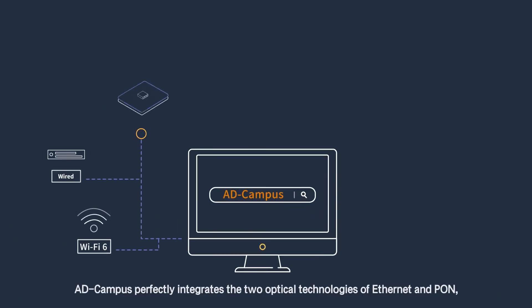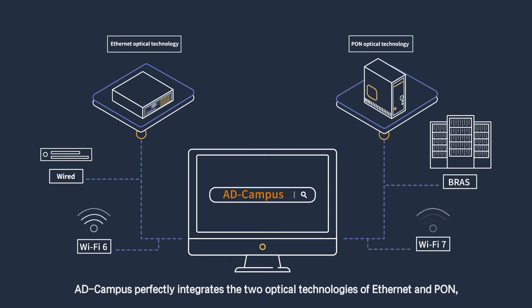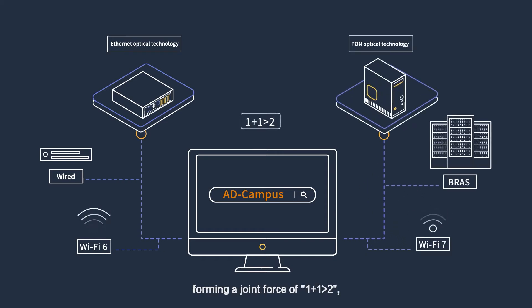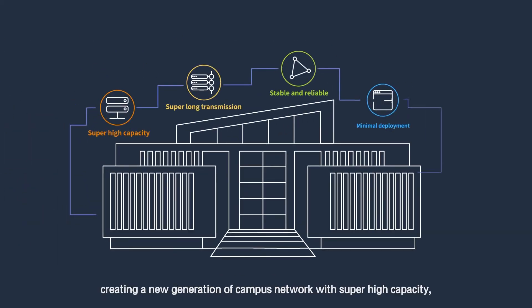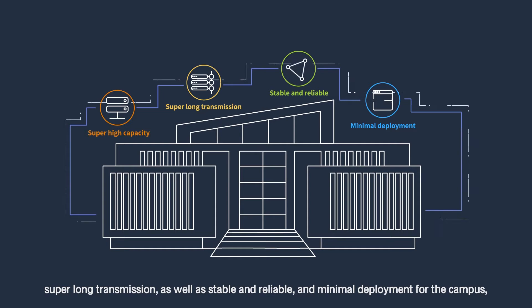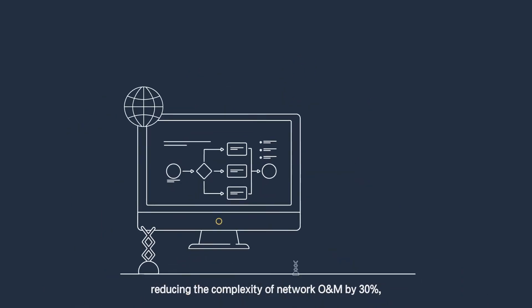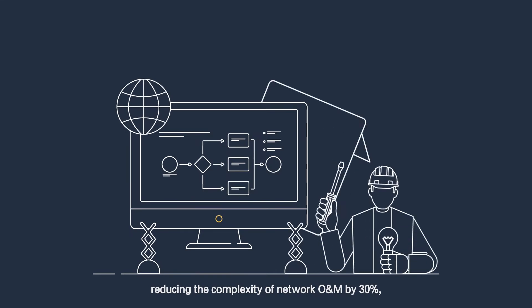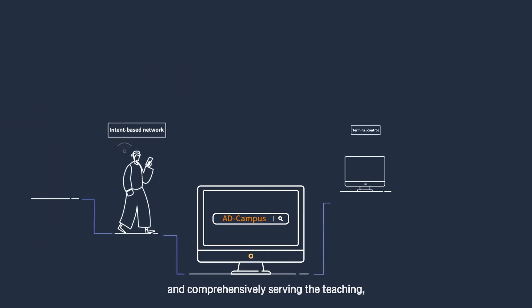AD Campus perfectly integrates the two optical technologies of Ethernet and PON, forming a combined force where 1 plus 1 is greater than 2 — creating a new generation of campus network with super high capacity, super long transmission, as well as stable, reliable, and minimal deployment for the campus.